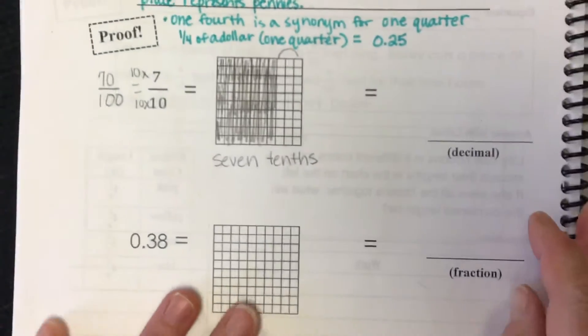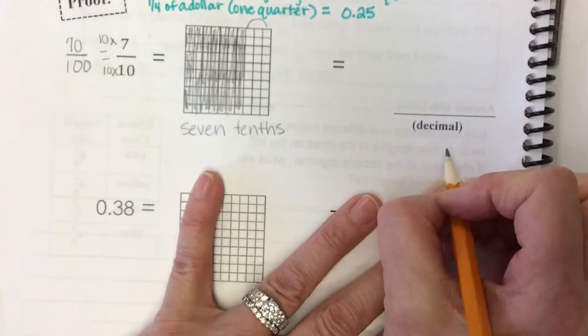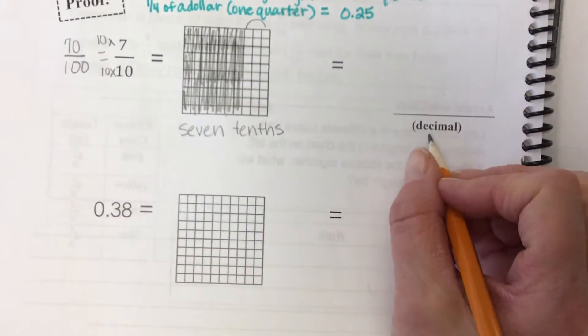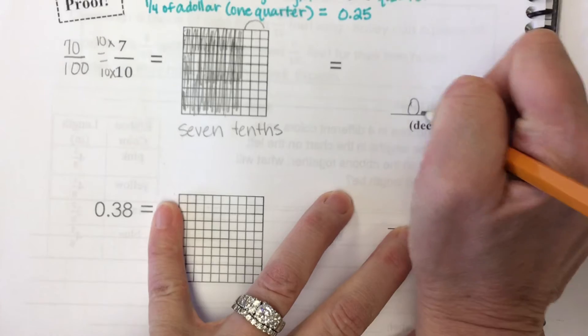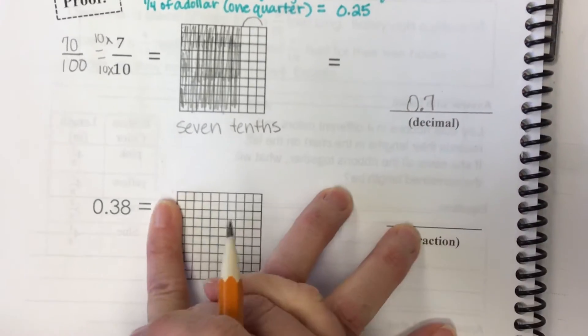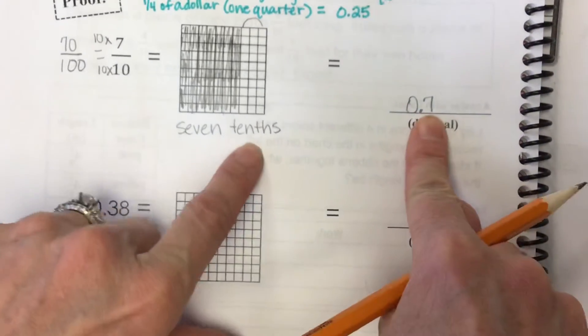How do we write that as a decimal? How do I write seven tenths as a decimal? Derek? 0.7. 0.7 seven tenths. It ends in the tenths place.